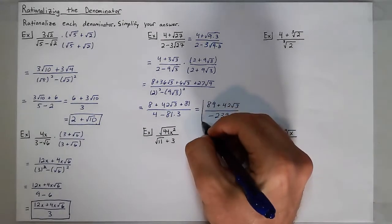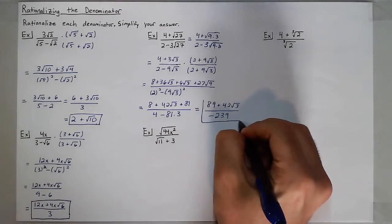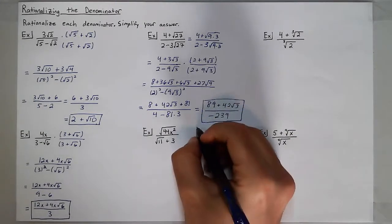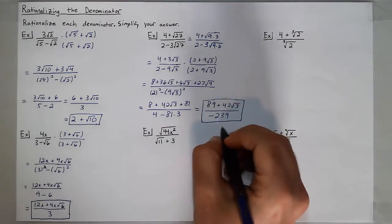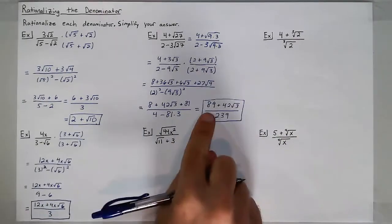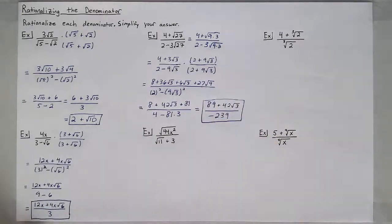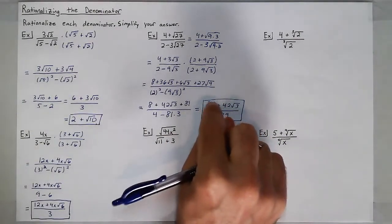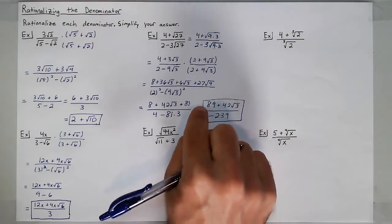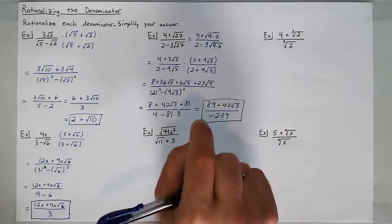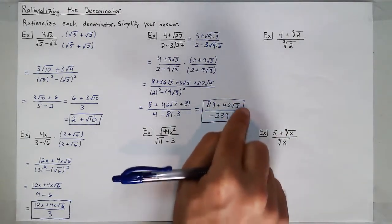You can write your answer as-is, or move the negative in front of the fraction, or move the negative to the numerator, giving negative 89 minus 42 square roots of 3, over positive 239.